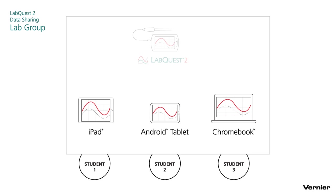Once the students have worked together to collect the data, they each have a copy of the data on their personal devices. If the students are tasked with finding the slope of the line, each member of the lab group might go about that job in a different way. One student might select a beginning and an end point and plot a straight line between them. Another student might do a statistical analysis of that data set. A third might choose to apply a curve fit. In each case, they find their own path to answers, but all work from the same data set.